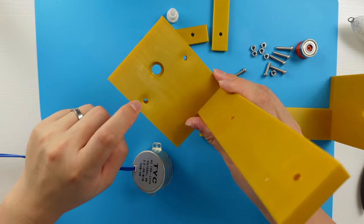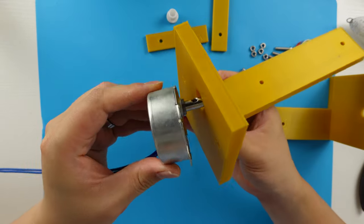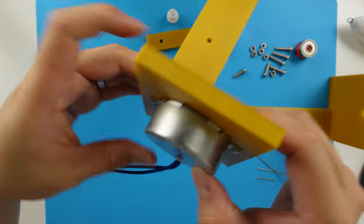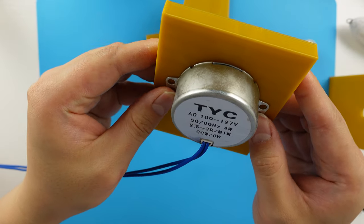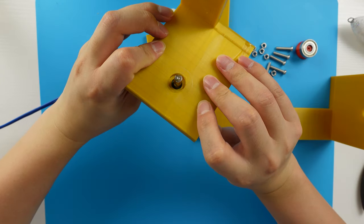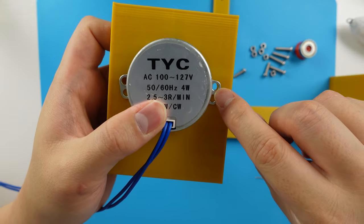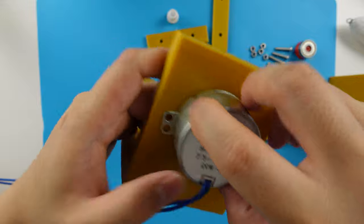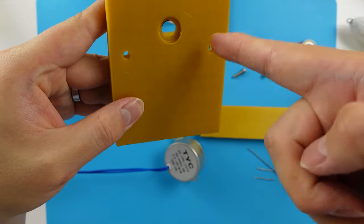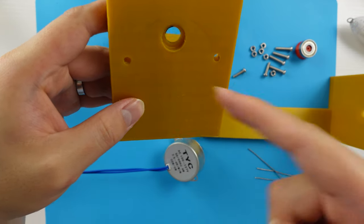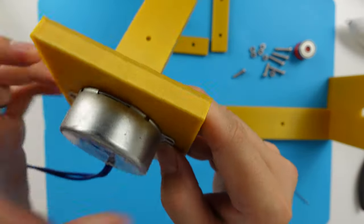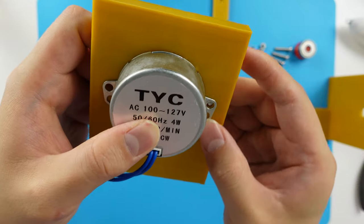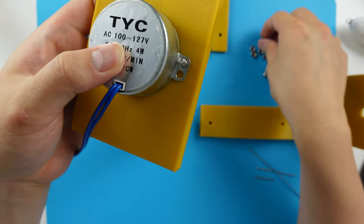You also need to drill two holes on the wall of the turner to attach this motor arm. So you can just put this motor arm into the right position. Then use a marker to mark the hole here, mark here and mark here. Then use a drill to drill it, make two holes. Then attach the motor by using this 16mm long M4 screw.